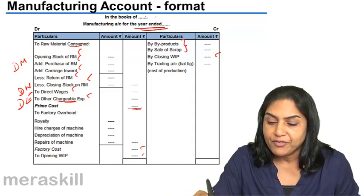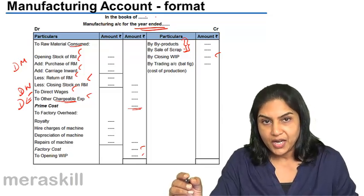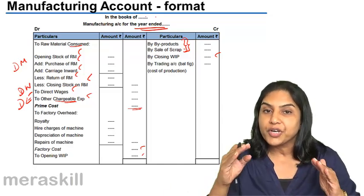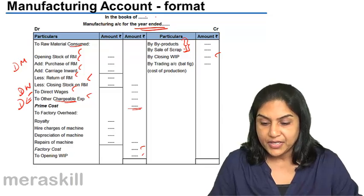We also have two other items on the credit side of the manufacturing account. Two items. Why are they shown on the credit side? They go to reduce the cost of production. How is that?